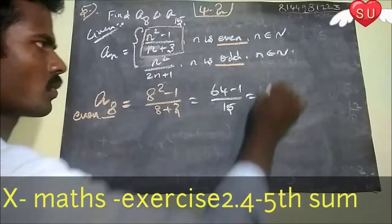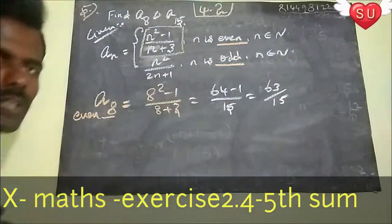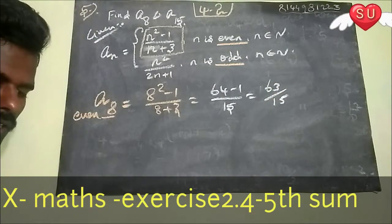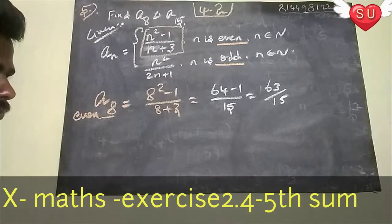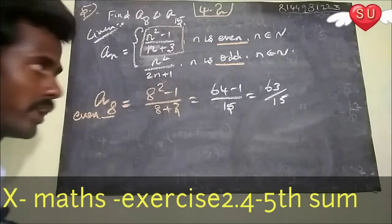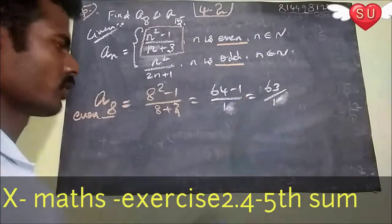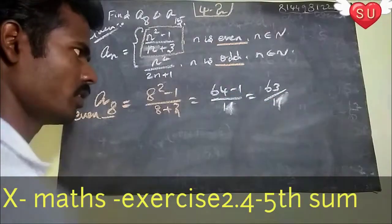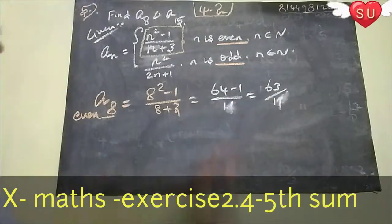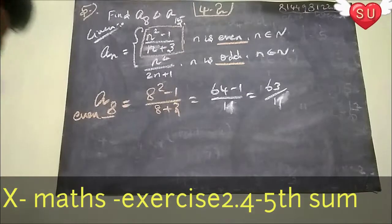So, 64 minus 1 is 63 divided by 15. This is... wait, some mistakes. 8 plus 3 is 11. Okay? So 8 plus 3 is 11, and then 63 divided by 11. Okay?